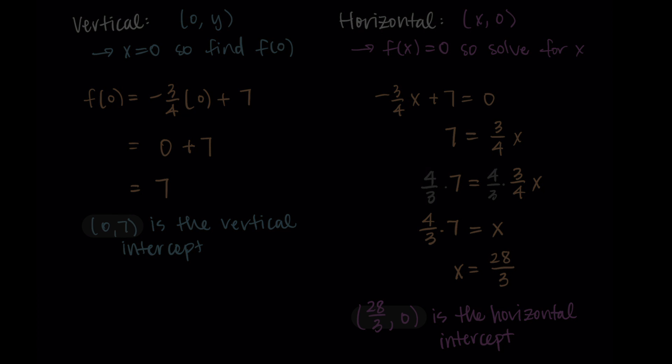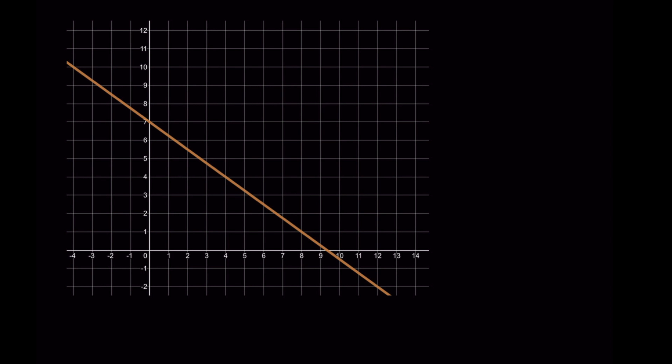To conclude, I graphed this line in Desmos: y = -3/4x + 7. We can see that the +7 corresponds to our vertical intercept at (0, 7), and we're crossing the horizontal axis at 9 and 1/3, which is 28/3, with a y-value of zero. That is how we find horizontal and vertical intercepts, especially with linear functions. Thanks so much for watching, and I'll talk to you in the next one.